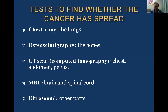To detect distant metastasis: chest X-ray for the lungs, osteoscintigraphy for bones with technetium-99m, CT scan for all organs in the chest, abdomen, and pelvis, MRI for central nervous system metastasis, and ultrasound for specific indications for some organs.